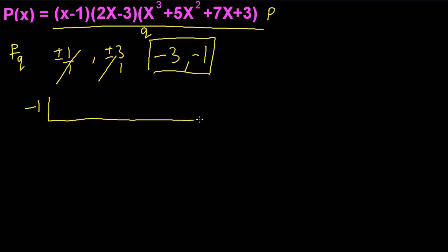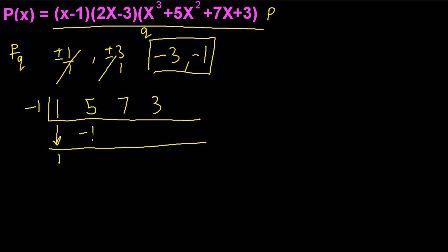Starting with x = −1: we list the coefficients 1, 5, 7, and 3. Bringing down the 1, multiplying −1 × 1 = −1, adding gives 4; −1 × 4 = −4, adding gives 3; −1 × 3 = −3, adding gives 0. We get a zero remainder, so x = −1 is a root.